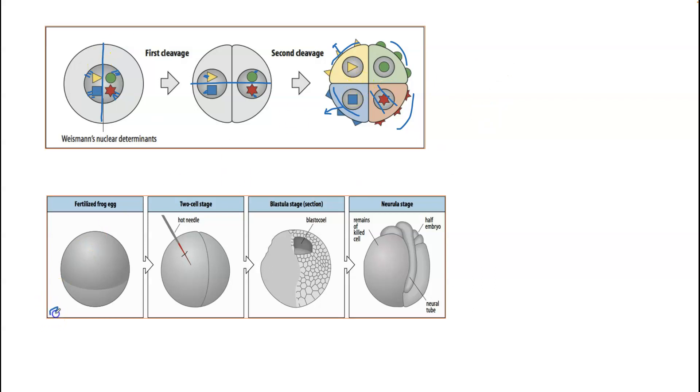Wilhelm Roux did have some apparent evidence. He observed frog development—frogs were great for studying because the eggs are quite large. You can see them with your naked eye; you only need a magnifying glass really to observe them carefully. He took a red hot needle and destroyed one of the cells, which he still left attached, because it was really difficult to try to detach this without just destroying the whole embryo.